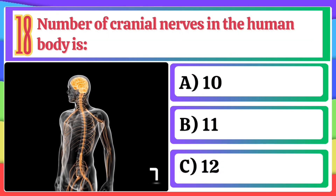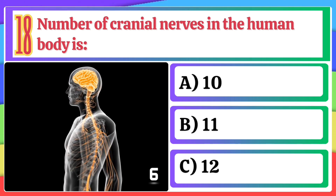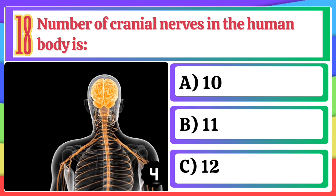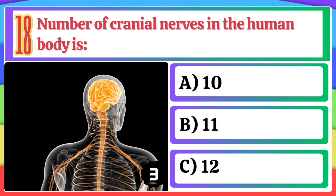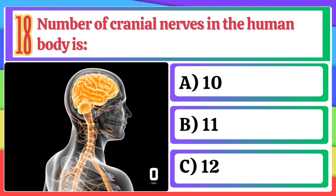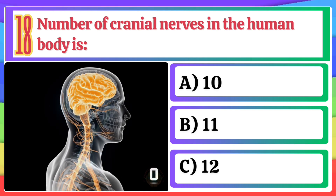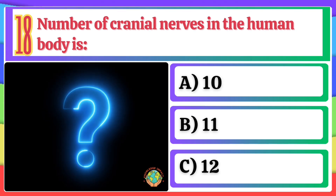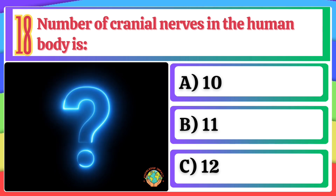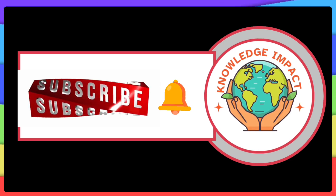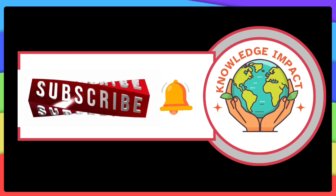Number of cranial nerves in the human body is: A) 10, B) 11, C) 12. Drop your answer to this question in the comments. Subscribe and keep learning with us for more great content.